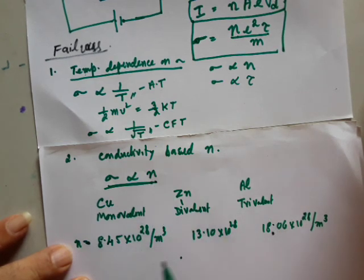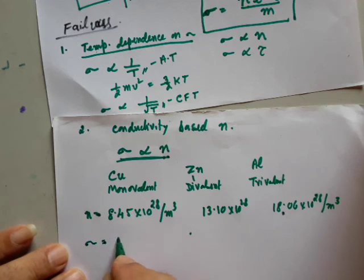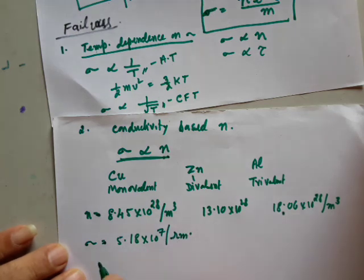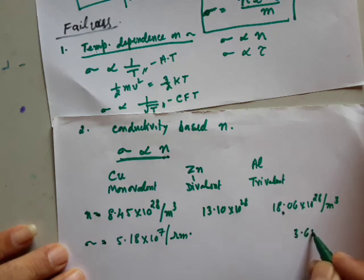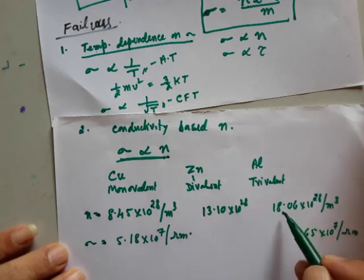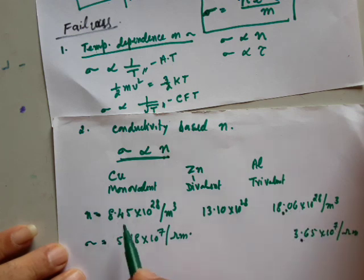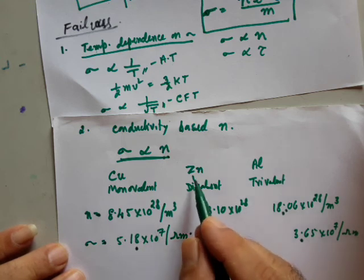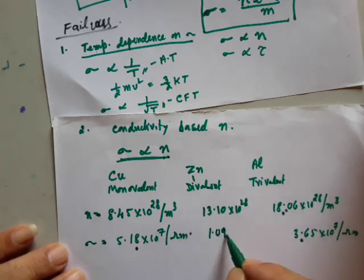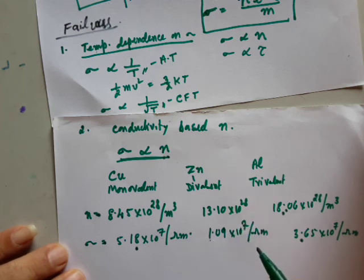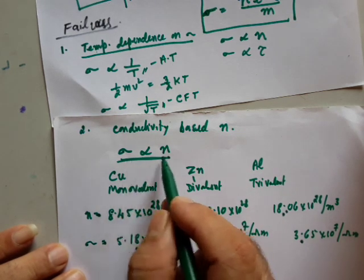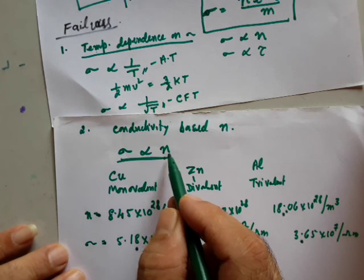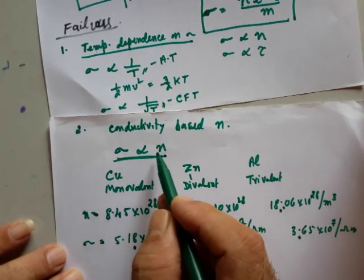According to classical theory, aluminum should be the best conductor with conductivity maybe double that of copper. But the actual conductivity of copper is 5.18 × 10⁷ per ohm-meter — very large. Aluminum's conductivity is only 3.65 × 10⁷ per ohm-meter, which is less. Zinc's conductivity is around 1.09 × 10⁷ per ohm-meter — the least. Clearly, the classical free electron theory is not able to explain conductivity of metals based on the number of electrons. It is not just directly proportional to n.